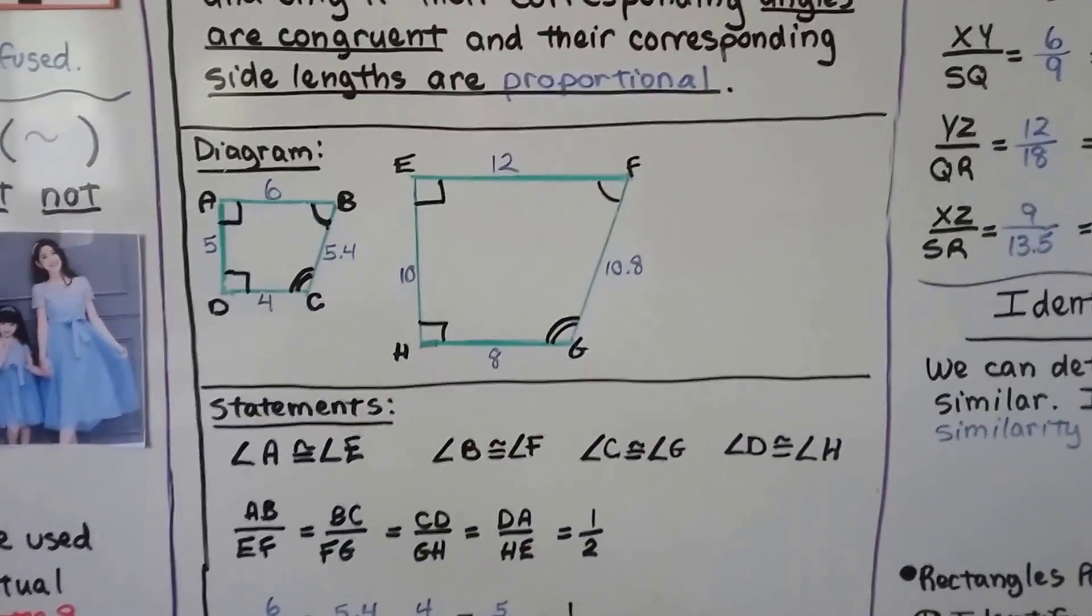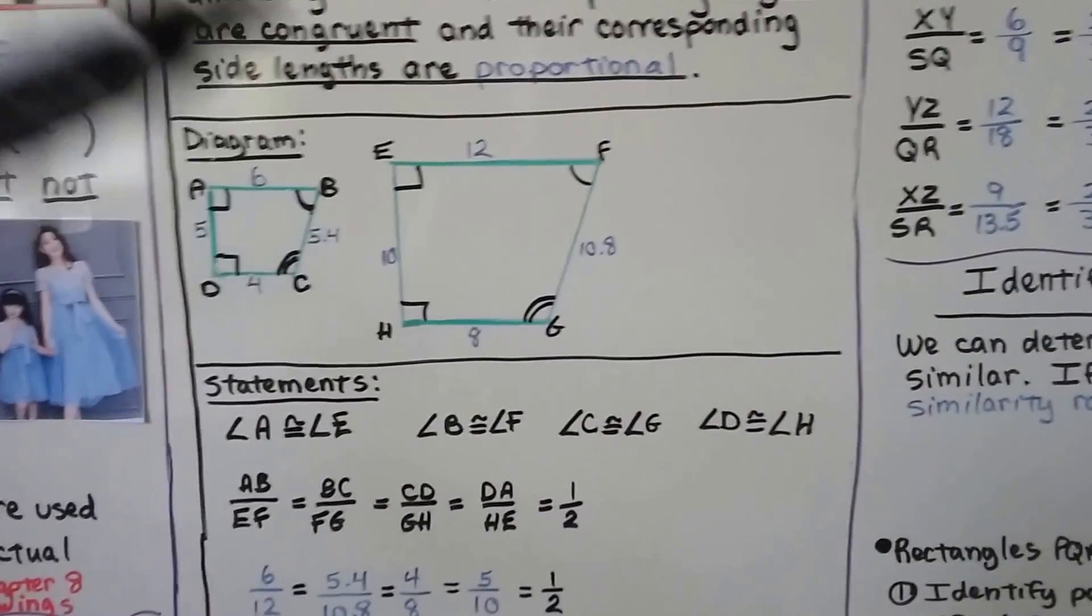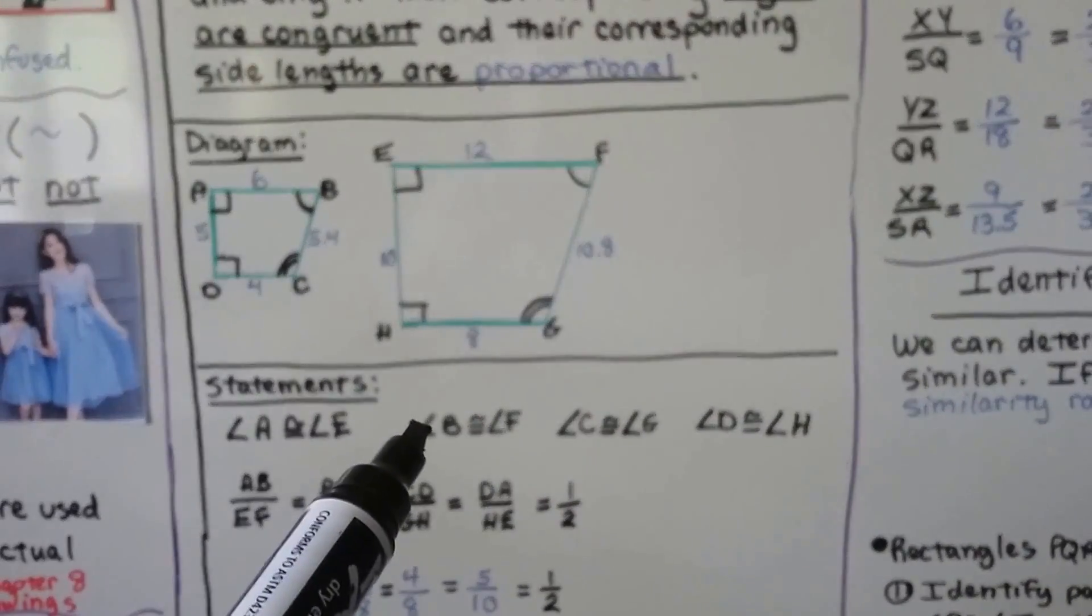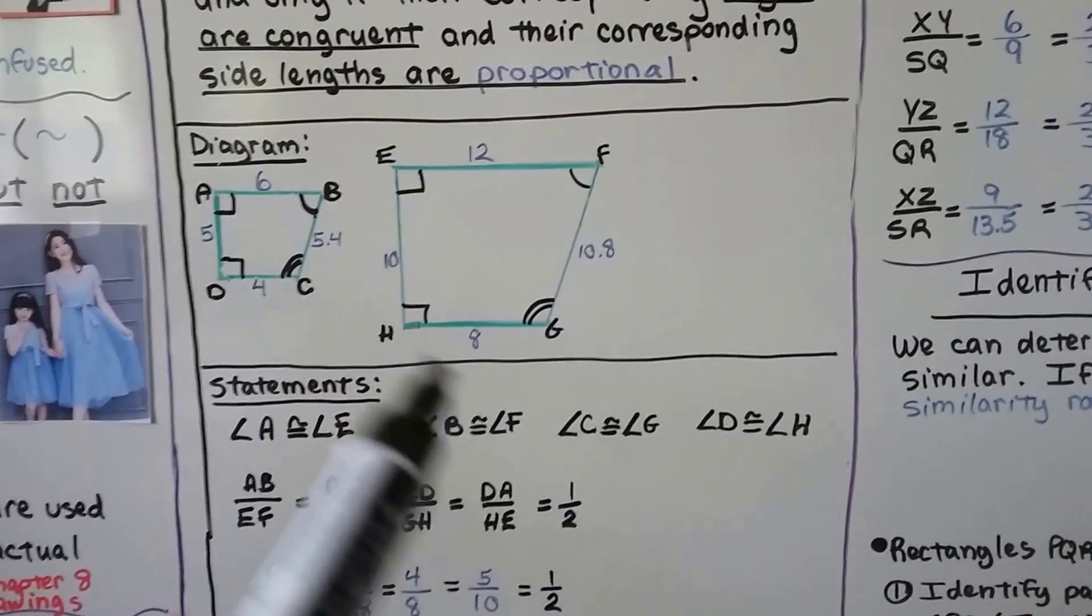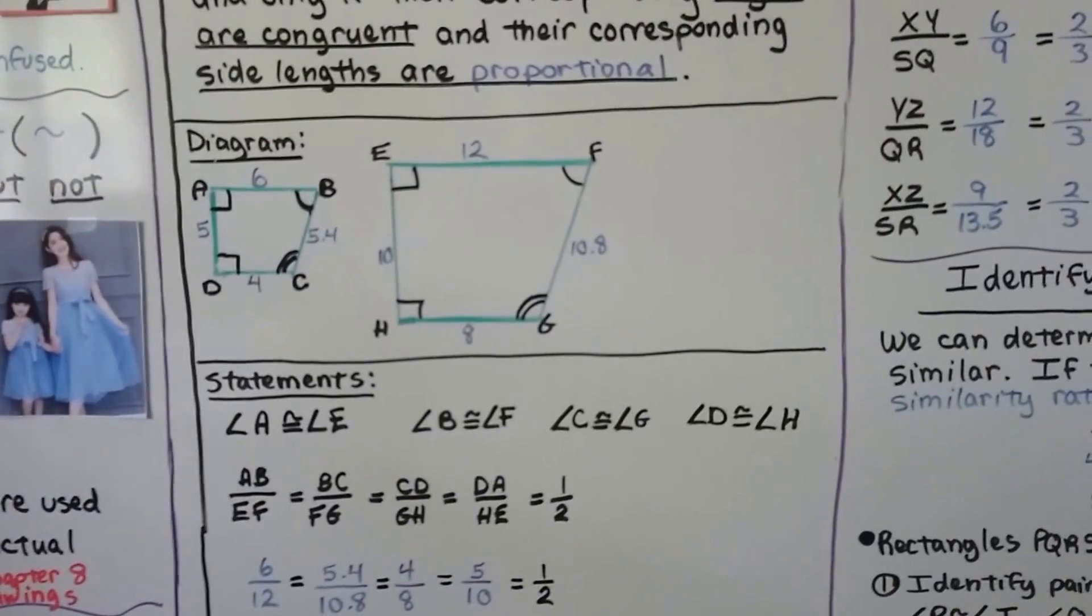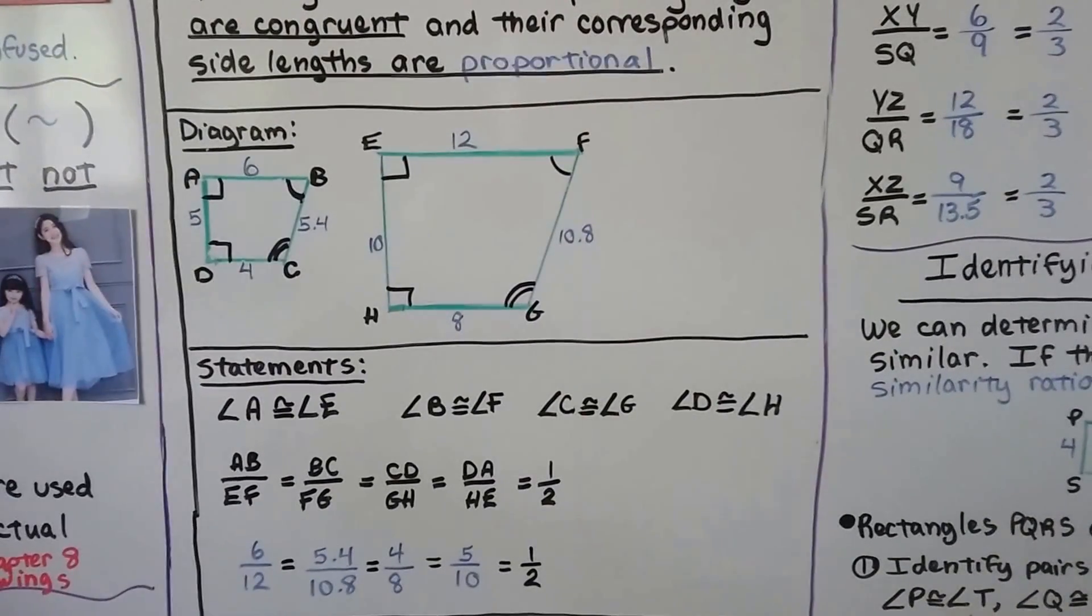Our statements are that for the angles, angle A is congruent to E - they're both right angles. Angle B is congruent to angle F. Angle C is congruent to angle G. And D is congruent to H - both right angles.